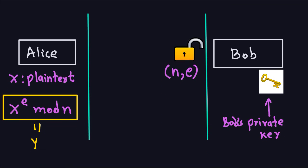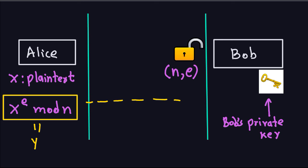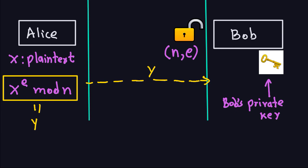The public key is the pair (N, E). Alice takes plaintext X — already a number — and since N and E are known to everyone, she computes Y = X^E mod N. That number Y is the ciphertext, which is sent through the insecure channel to Bob. Bob receives ciphertext Y.